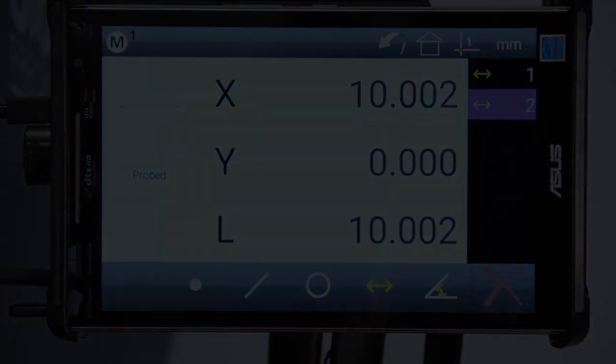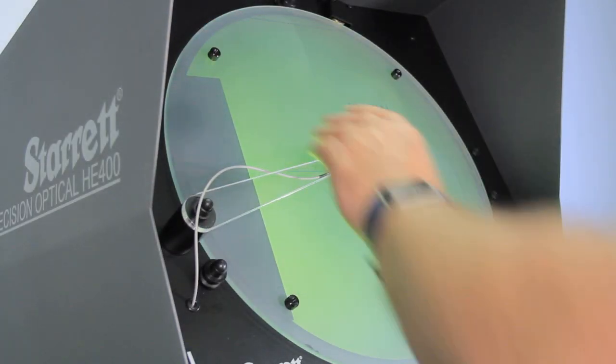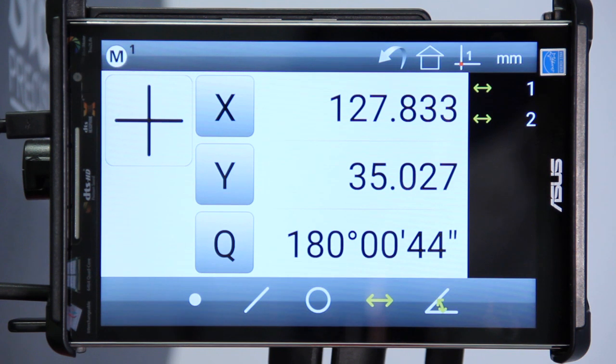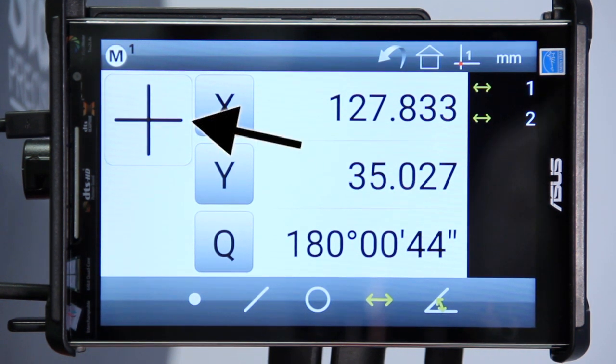Now what you want to do is check your edge detection. Bring your edge detection in the middle of the screen. In the upper left hand corner, there is a crosshair. Push that to get edge detection to come up.